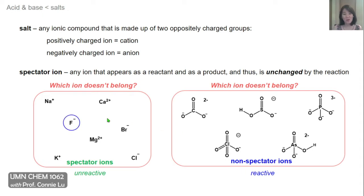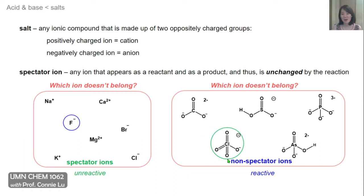Fluoride is the conjugate base of the weak acid HF, and it is itself a weak base that can perform acid-base chemistry in water. On the right, the member that doesn't fit is perchlorate, ClO4-. This is the counter anion of the strong acid perchloric acid, HClO4, and it is unreactive by itself in water.